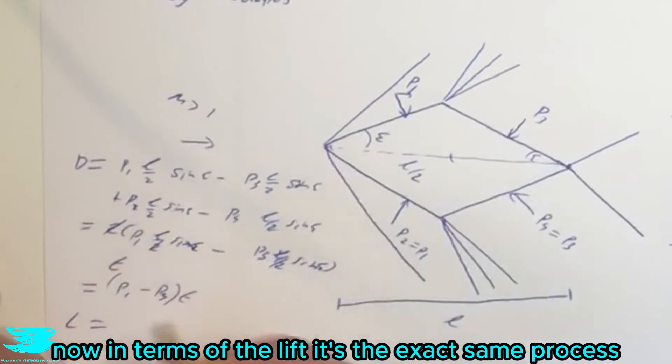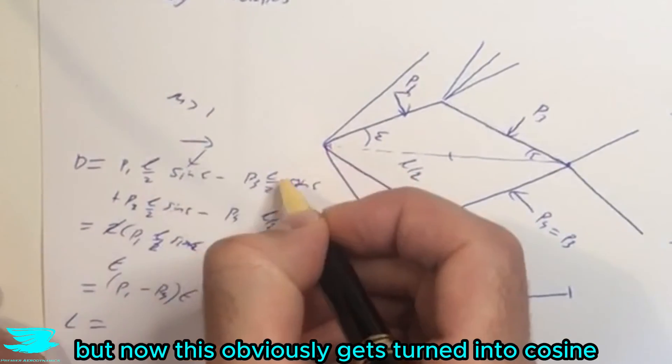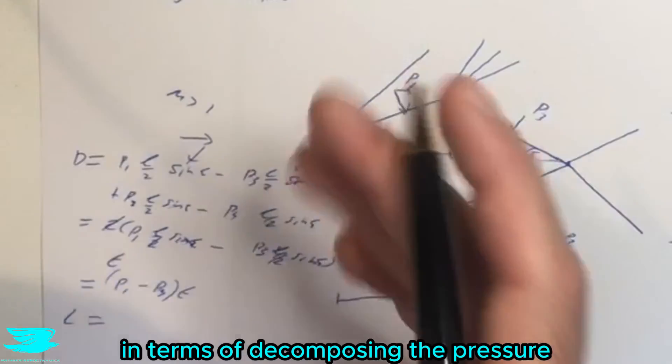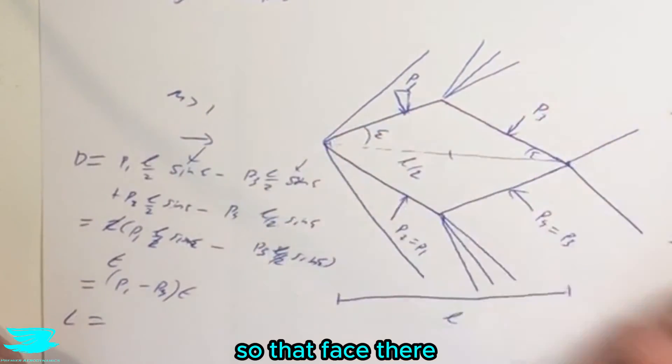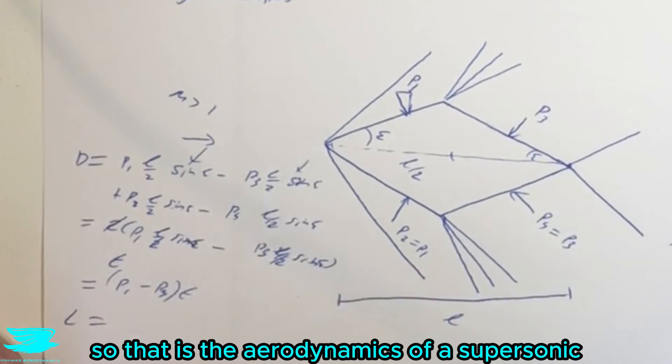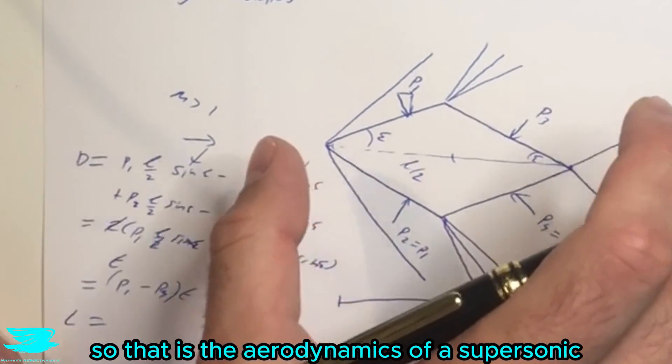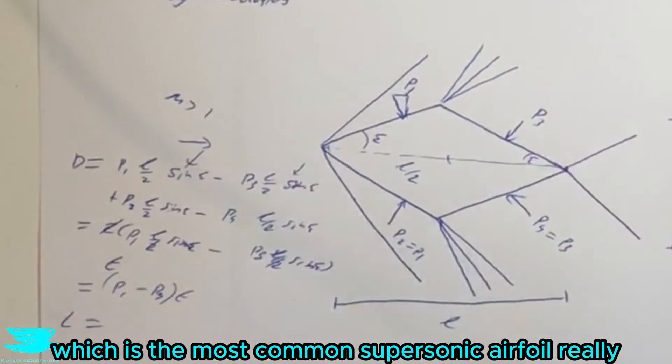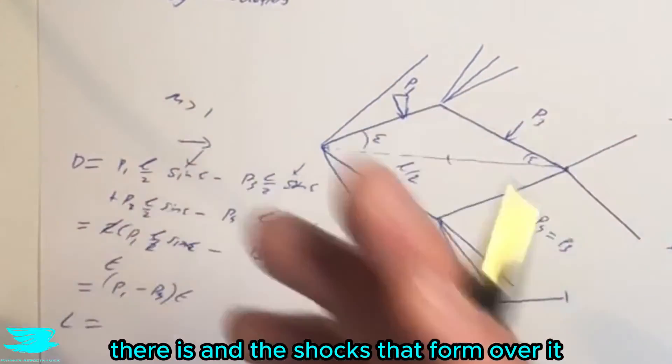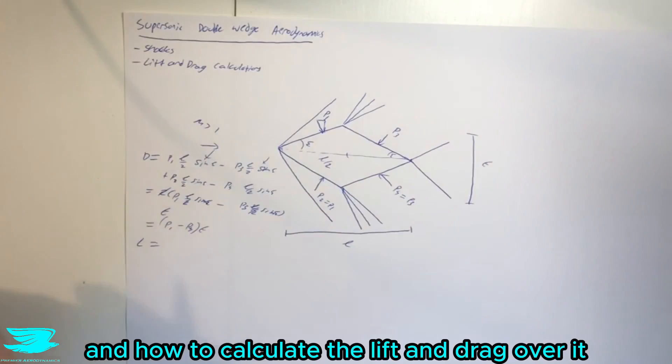Now in terms of the lift, it's the exact same process, but now this obviously gets turned into cos instead of sine, because we're now in the other direction in terms of decomposing the pressure. So this face there, and it comes out to be a very similar thing. So that is the aerodynamics of a supersonic double wedge airfoil, which is the most common supersonic airfoil really there is, and the shocks that form over it, and how to calculate the lift and drag over it.